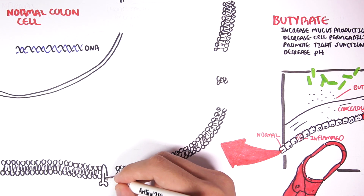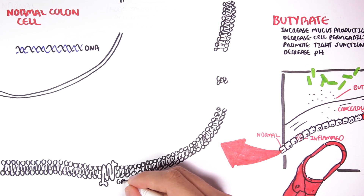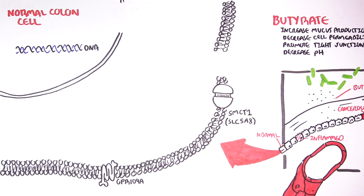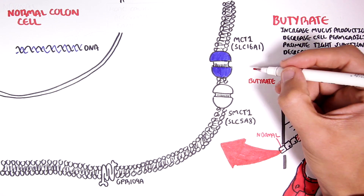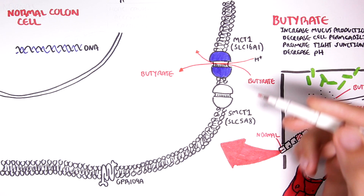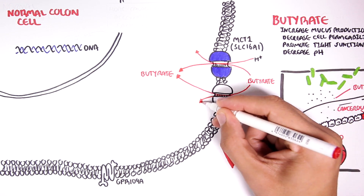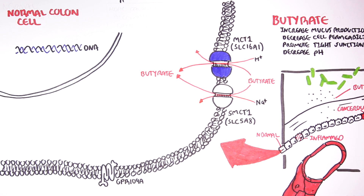Butyrate elicits its effects through G protein receptor 109A and G protein receptors 41 and 43, and can be transported inside the cell through the monocarboxylate transporter 1 (MCT1) and the sodium monocarboxylate transporters. MCT1 works as a co-transporter for hydrogen and butyrate. SMCT1 functions as a co-transporter for sodium and butyrate. If a lot of butyrate is being absorbed, this may result in a lot of sodium being absorbed via SMCT1, and since water tends to follow sodium, butyrate is considered an anti-diarrheal agent.